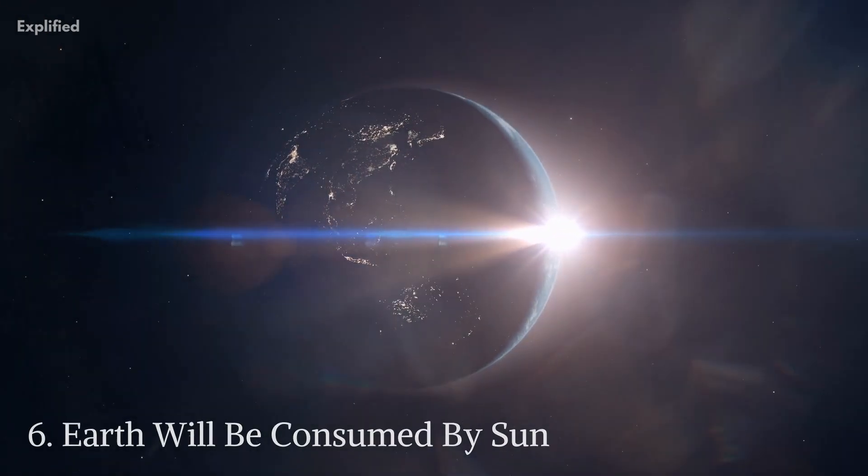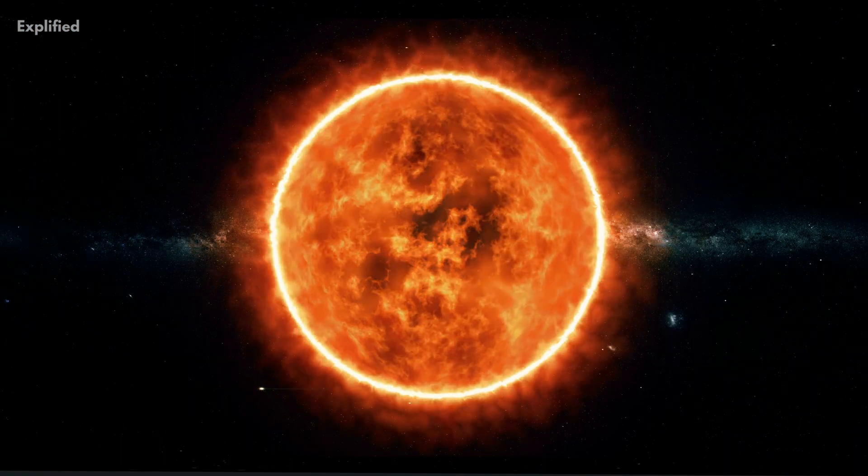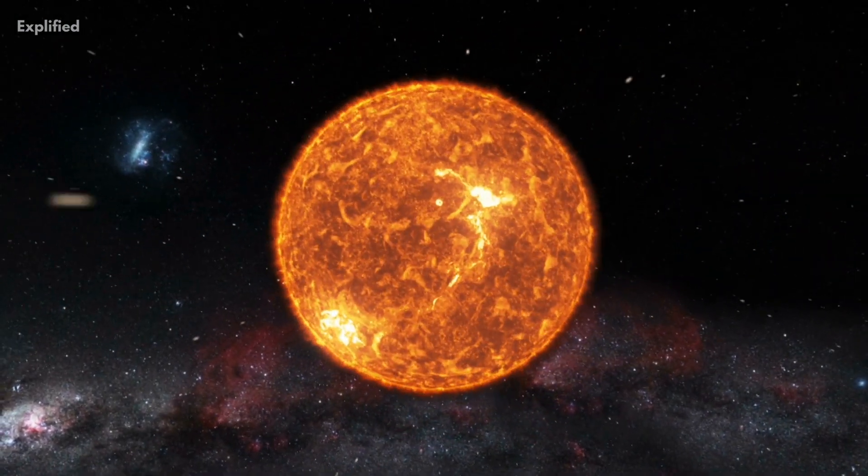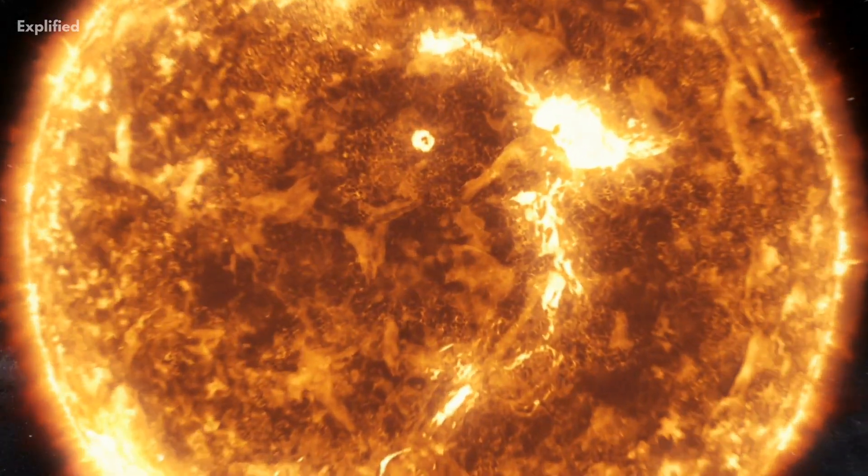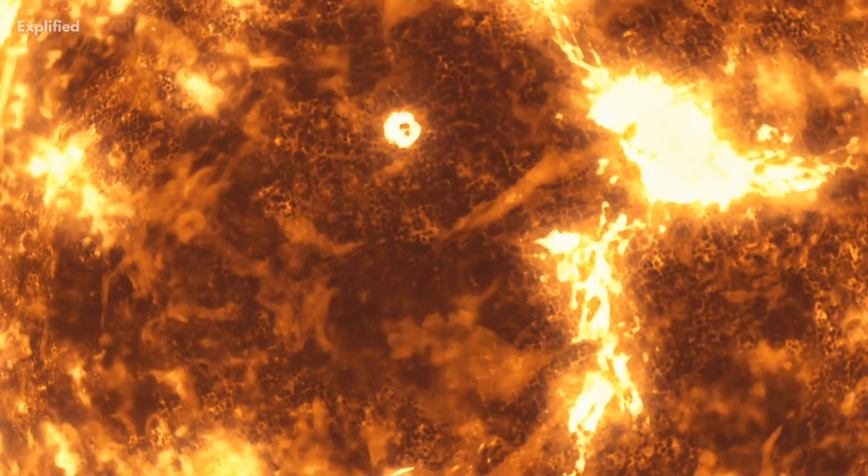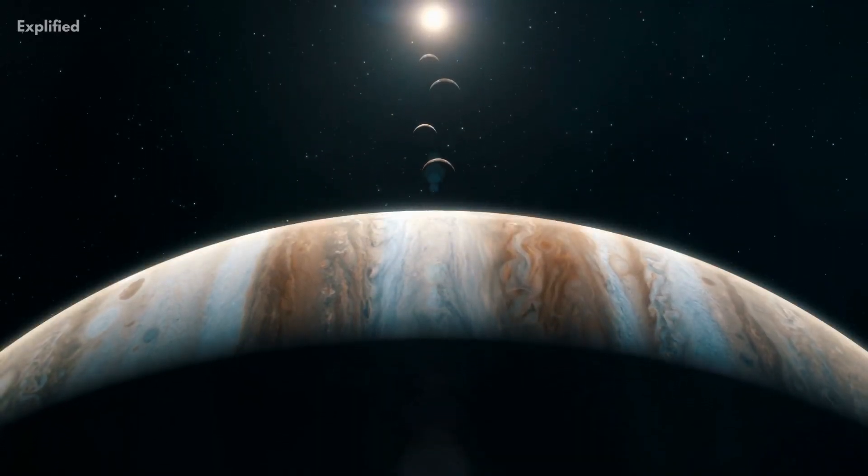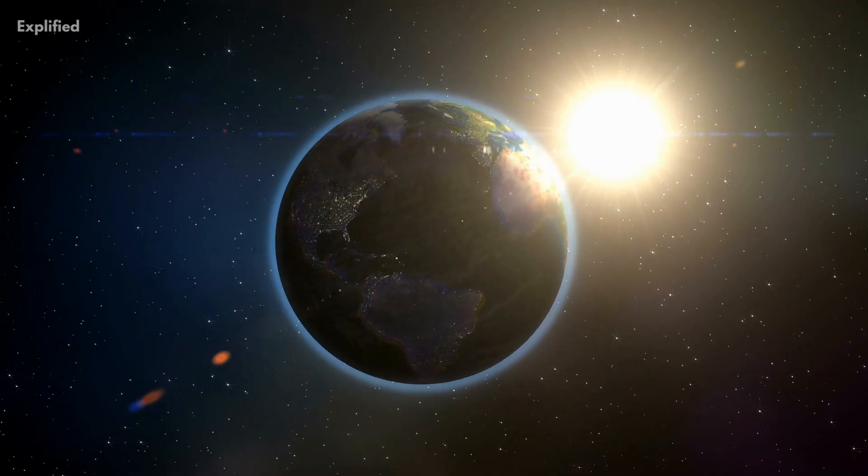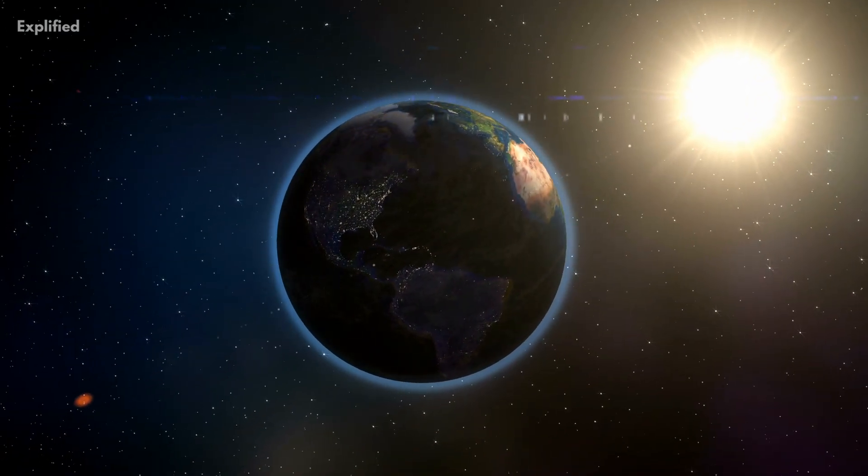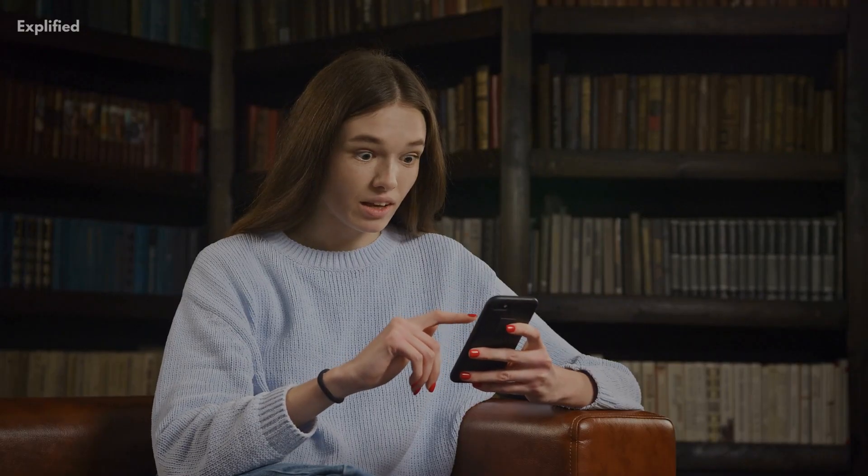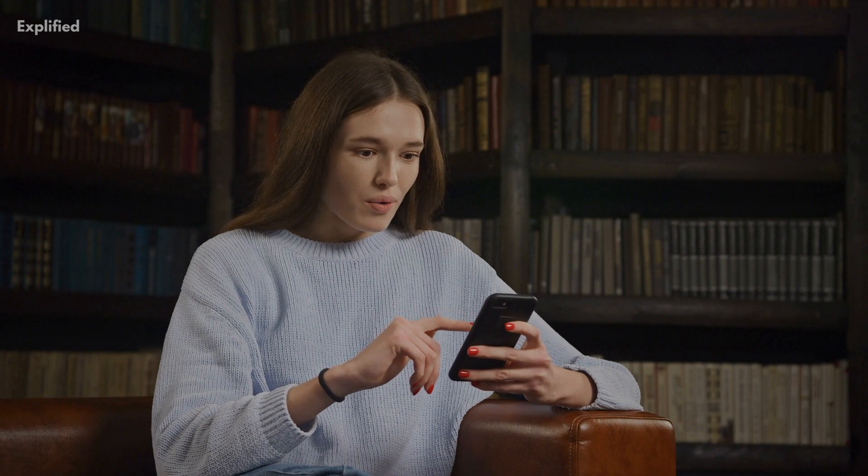Earth will be consumed by sun. As you might know, sun falls under the yellow dwarf category, but the sun will develop into a red giant in about 5 billion years. The sun will grow so large that it will cross through Jupiter's orbit in 7.6 billion years. So regrettably, Earth will be devoured by the sun. Hey, but the good news is we will probably be dead to experience Earth being devoured by sun.